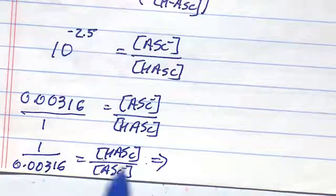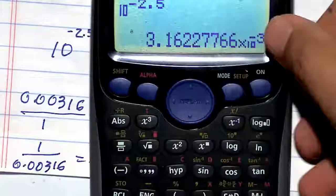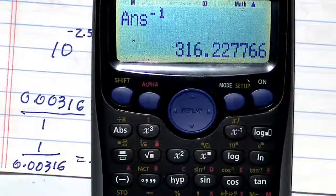The acetylsalicylic acid form is about 316 times more.